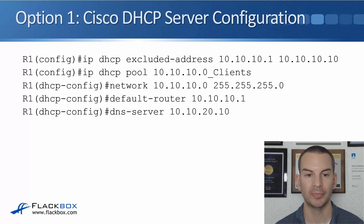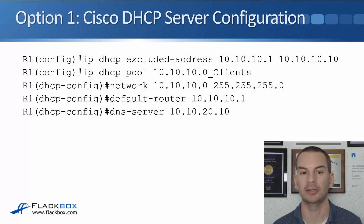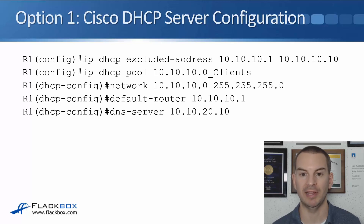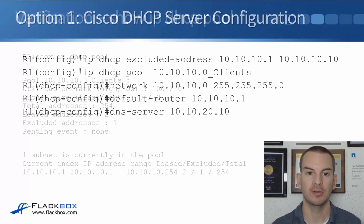We then need to configure our DHCP pool. At global config, we say ip dhcp pool, and for our example I've called it 10.10.10.0_clients, but you can call it anything you like — we could have called it 'Mickey Mouse' if we wanted to. That takes you to DHCP configuration. The next command: network 10.10.10.0 255.255.255.0 — that specifies the IP range of addresses we're going to be giving out and the subnet mask. Clients will be given an IP address from this range on a first-come, first-served basis. Next: default-router 10.10.10.1, to tell clients where their default gateway is. And finally: dns-server 10.10.20.10, to tell them where the DNS server is.